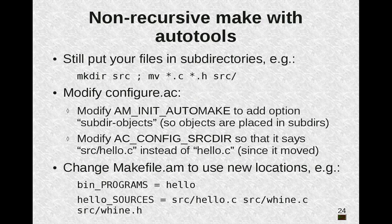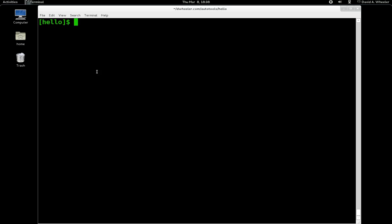And of course change your makefile.am and you simply list the new location. So if you put something in subdirectory src, you need to say you put it in src slash and so on. So now let's use subdirectories with a non-recursive make, which is really quite easy.